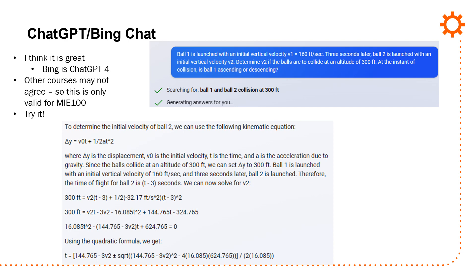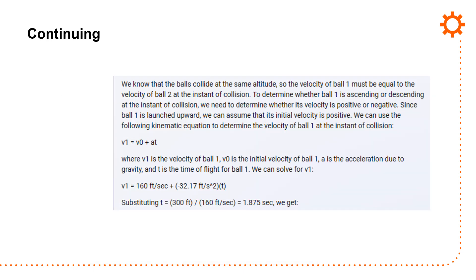It starts the answer, and it makes something that looks pretty good. You can see that there's a nice explanation. They collide at 300 feet. We set delta Y to be 300 feet. Ball one is launched with 160 feet per second, and three seconds later, ball two. This setup is actually correct. It's a really good way to do it. Using the quadratic formula, you get this, and everything's great. We know everything is fine, and we get 1.875 seconds, which is not correct.